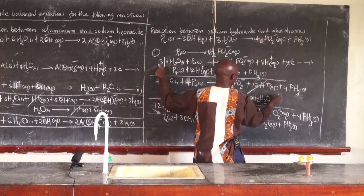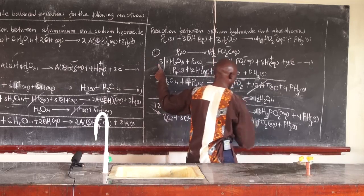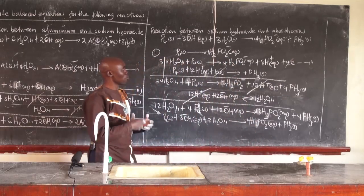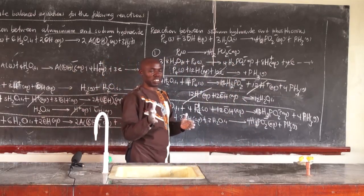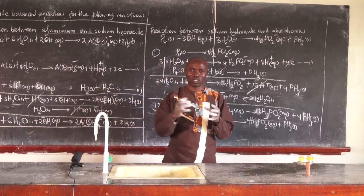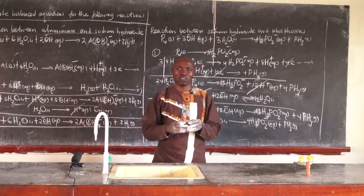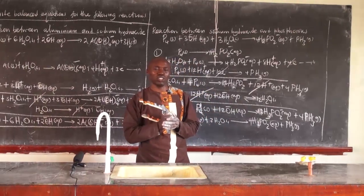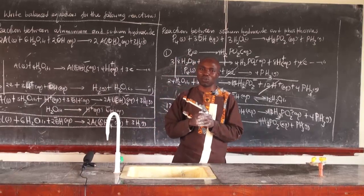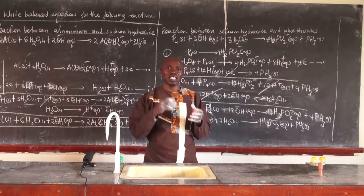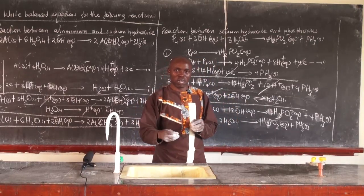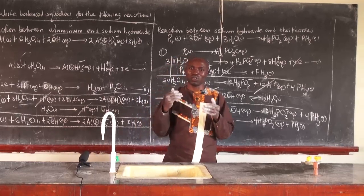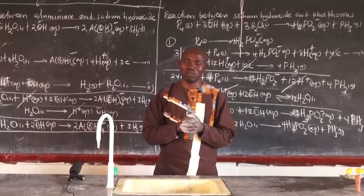So that's how you balance this equation by splitting into oxidation half and reduction half. This is an advanced method to balance advanced equations which might not be simple to balance. Thank you for watching. Tap the subscribe button to receive more interesting videos in a simple way. Thank you.